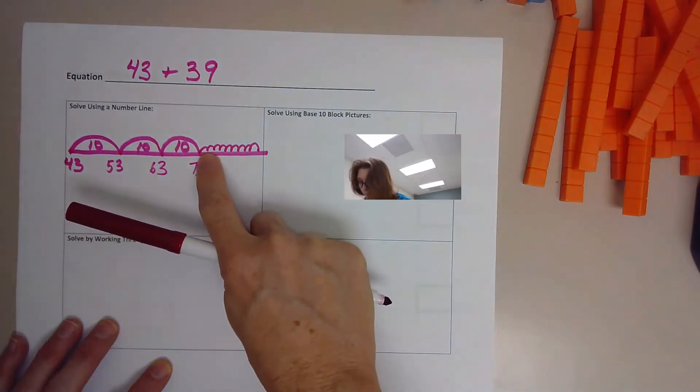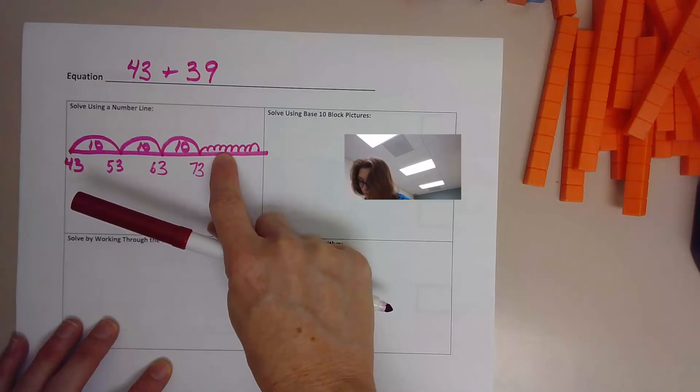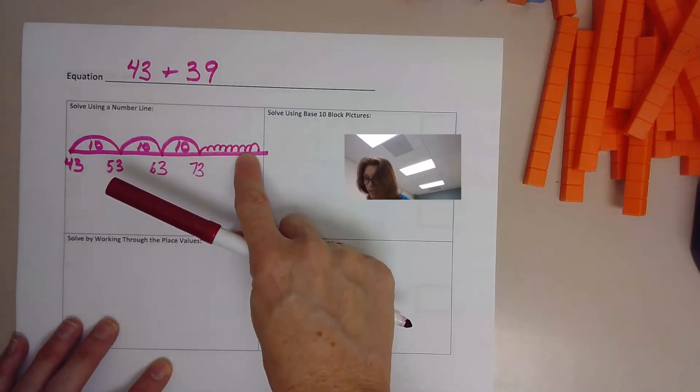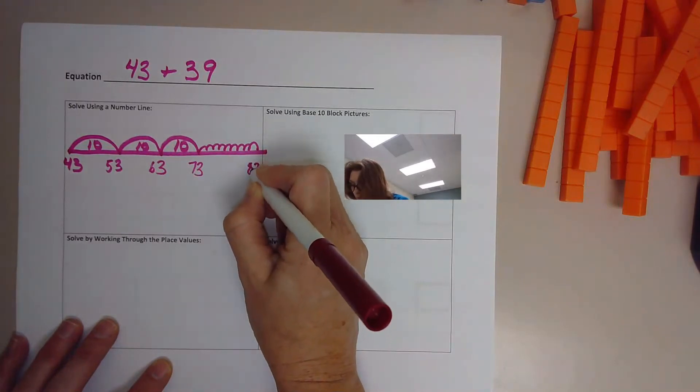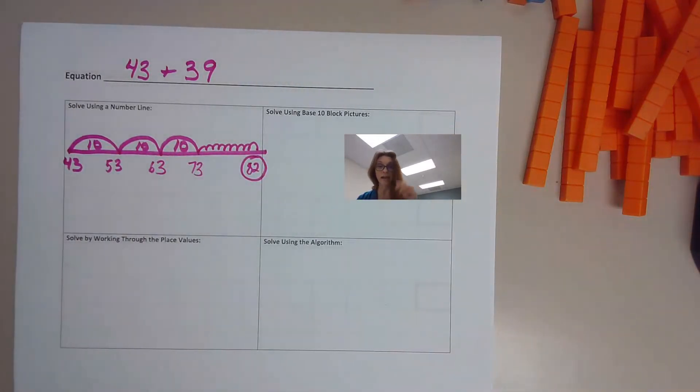So we were at 73, 74, 75, 76, 77, 78, 79, 80, 81, 82. That would get you to your answer. Please circle your answer to show me that's your answer.